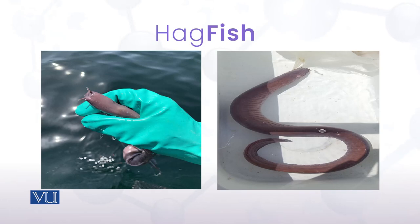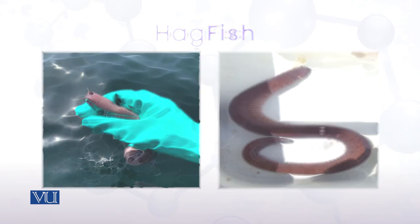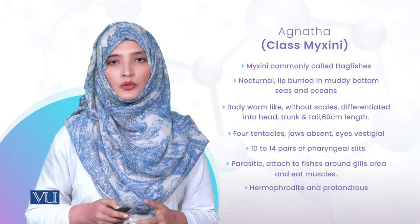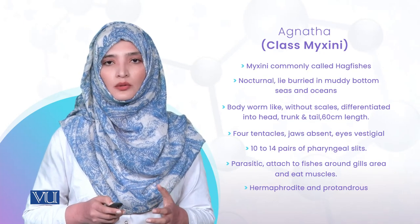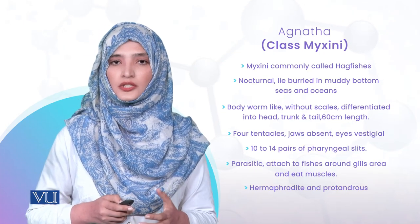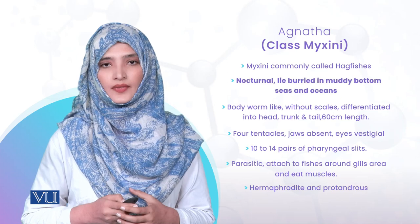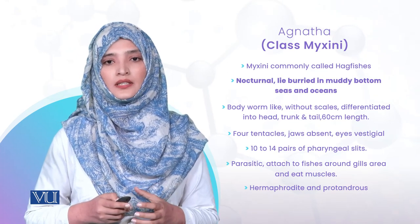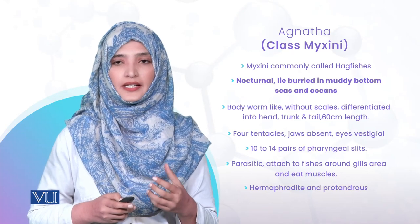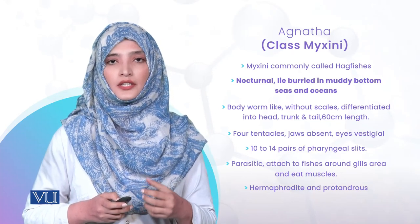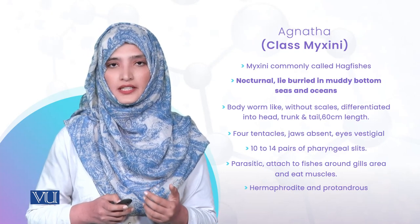Hagfish کی picture میں یہ fish بالکل ایک worm like نظر آ رہی ہے، جس میں mouth side پر tentacles نظر آ رہے ہیں اور body without scales ہے۔ Habitat کے بارے میں: یہ fishes throughout the world oceans میں - Atlantic Ocean اور Pacific Ocean میں - پائی جاتی ہیں۔ یہ usually bottom dwellers ہیں، muddy side پر زیادہ exist کرتی ہیں، اور nocturnal ہوتی ہیں کیونکہ رات میں mostly active ہوتی ہیں۔